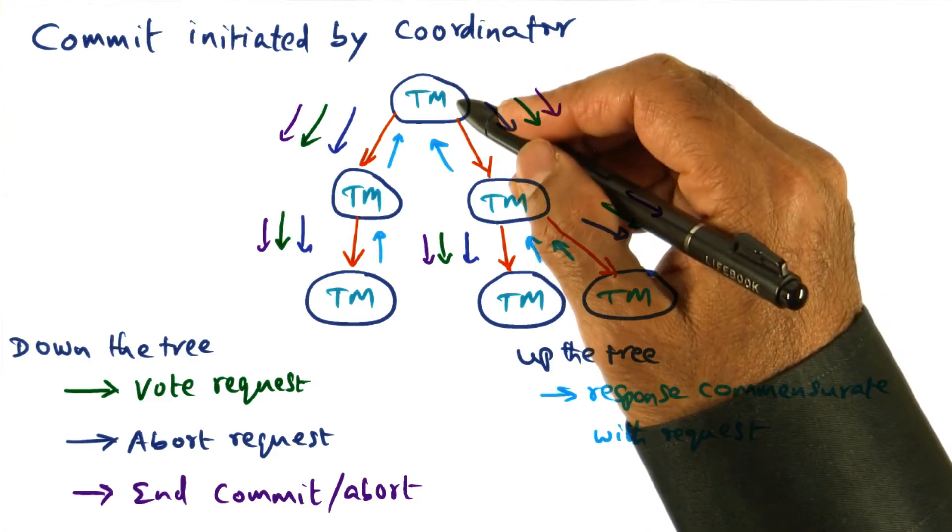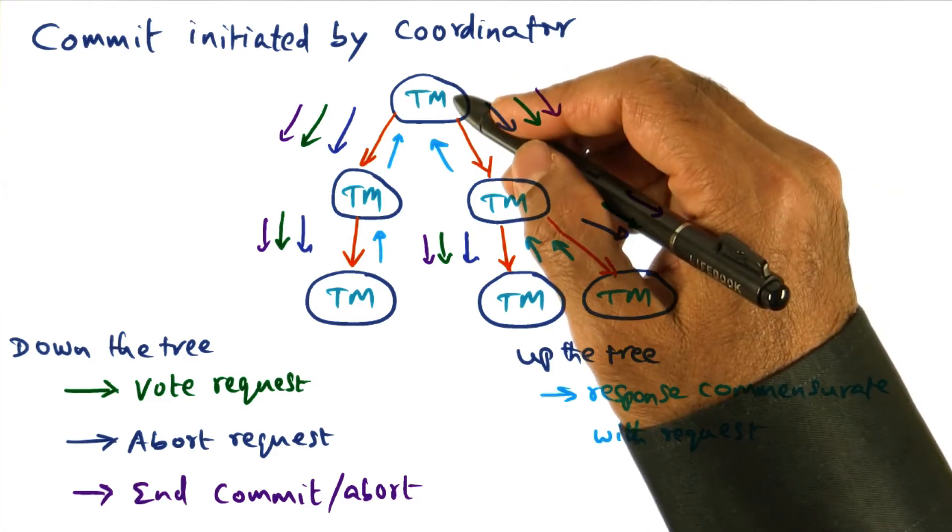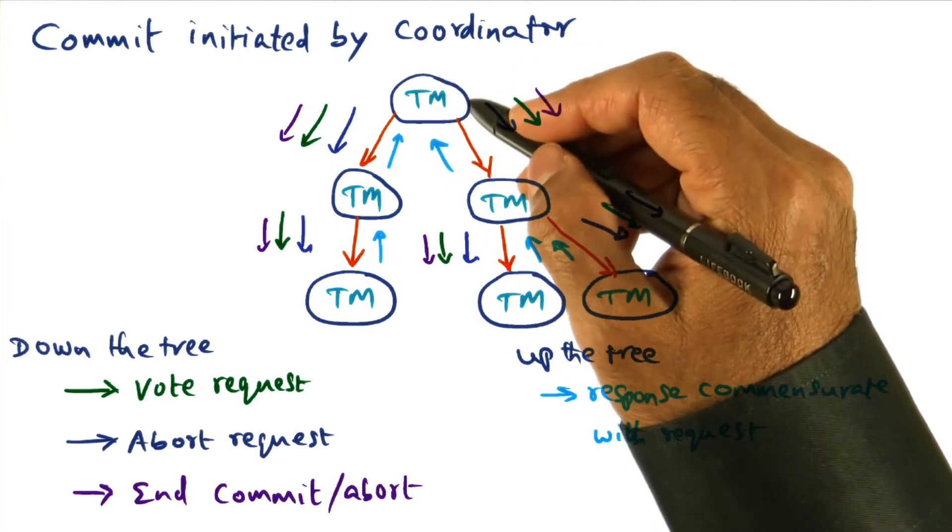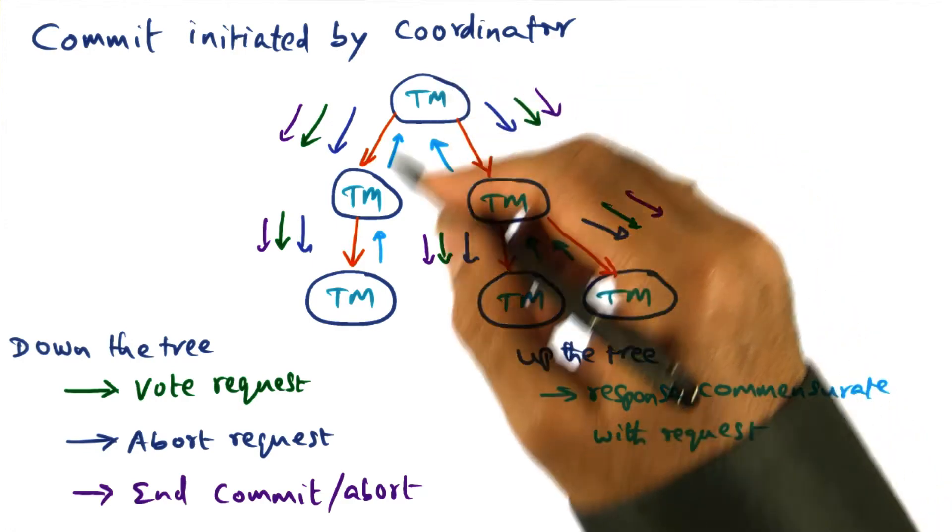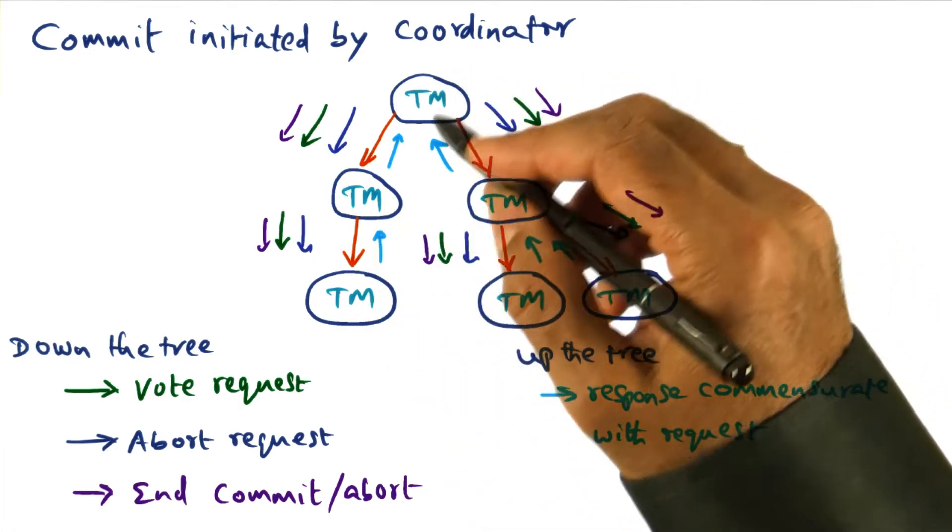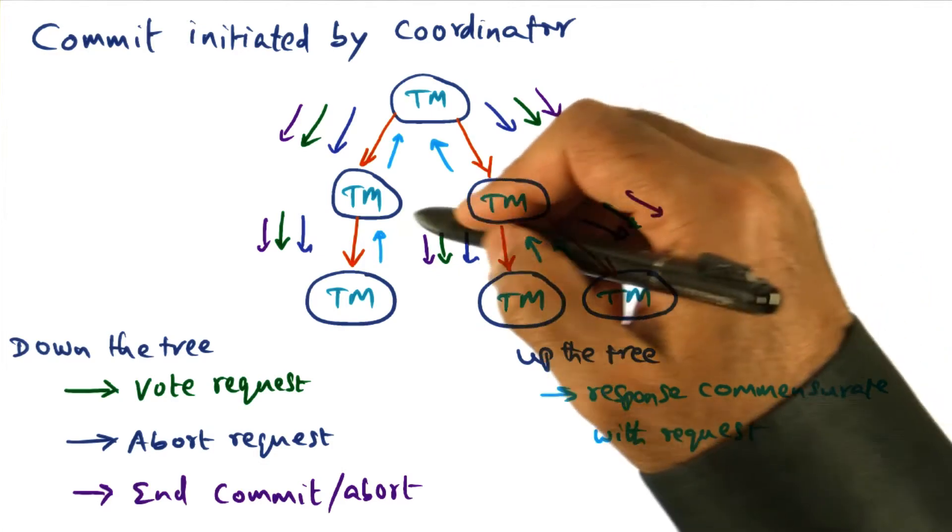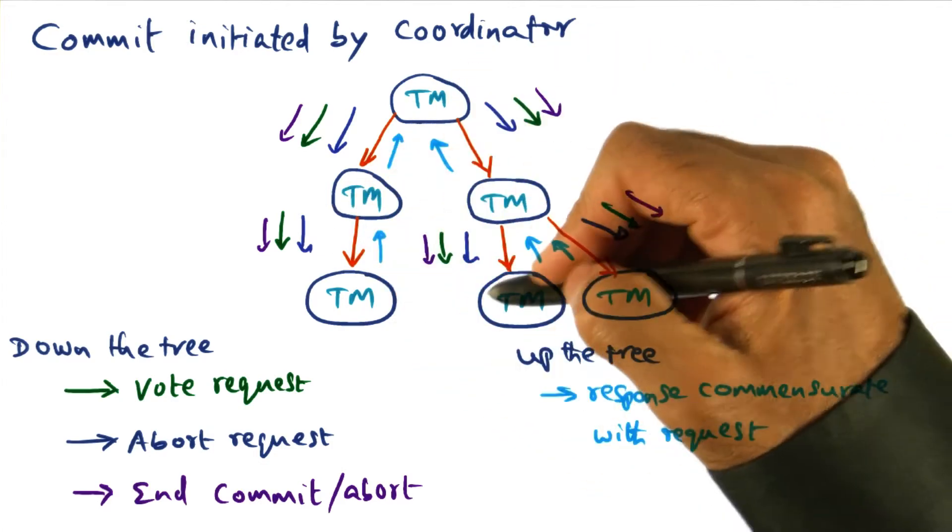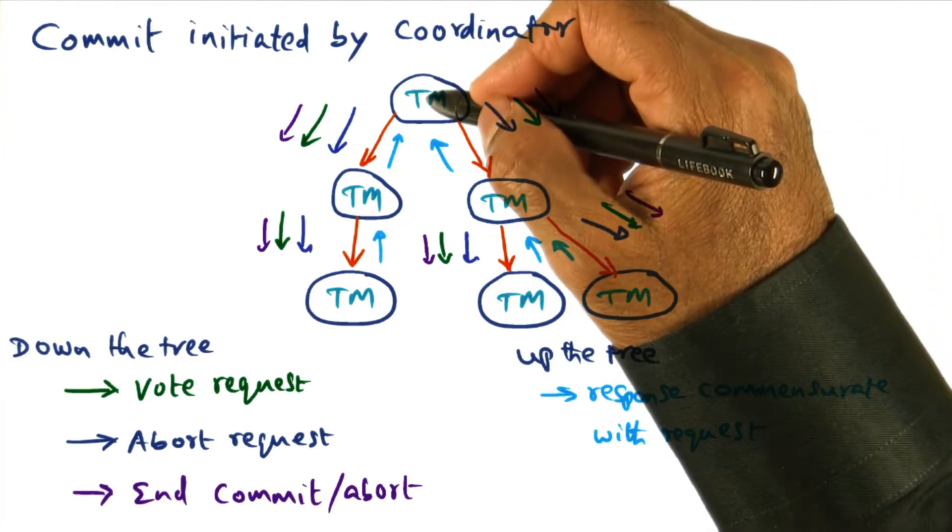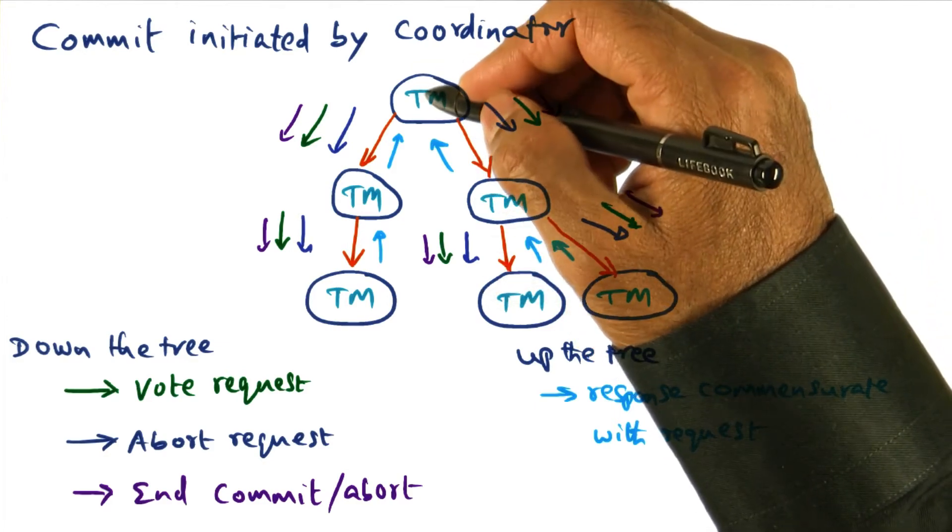So using again the file service as an example, if a client that started a file service request crashed for some reason, then the transaction manager, that is the coordinator for that client-server relationship, will then send an abort request to all the participating transaction managers that got touched by that particular client as a result of that file service request.